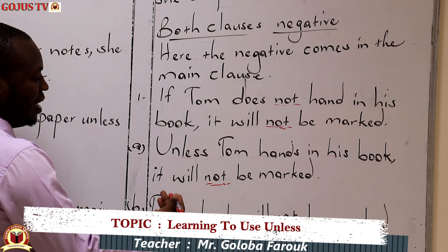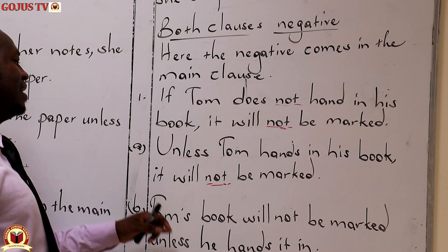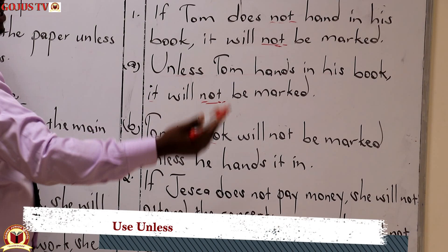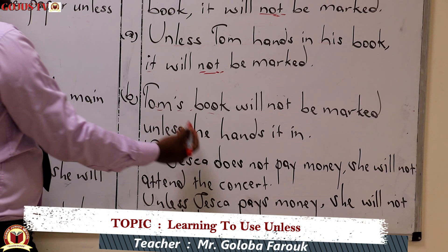Using 'unless' in the middle: 'Tom's book will not be marked unless he hands it in.' Note that when we begin with the main clause in the middle position, we can't begin with 'it' — we begin with the subject itself. Whose book was it? Tom's. So: 'Tom's book will not be marked unless he hands it in.'